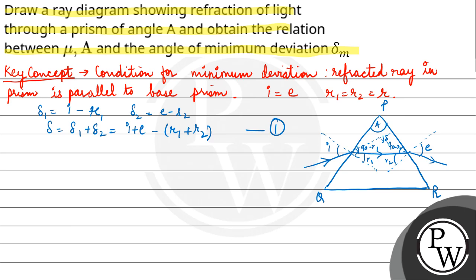Now consider triangle PST. Inside triangle PST, angle A plus 90 minus R1 plus 90 minus R2 equals to 180, sum of all the angles of triangle. So A is equal to R1 plus R2.